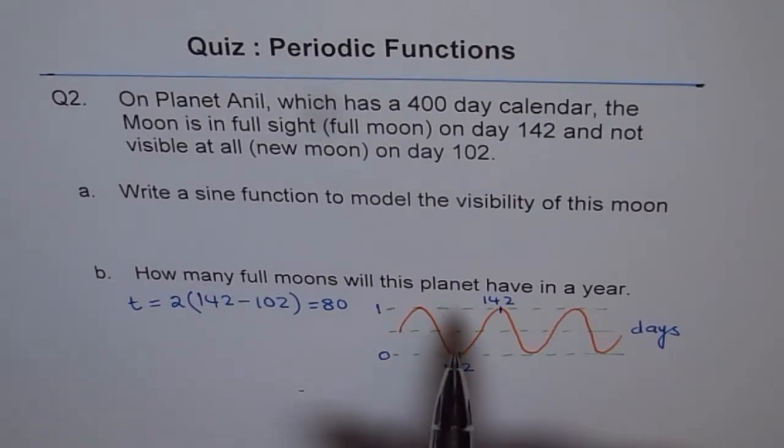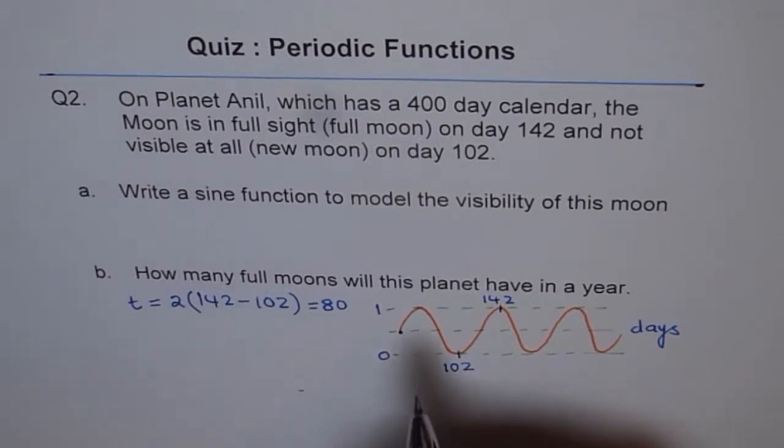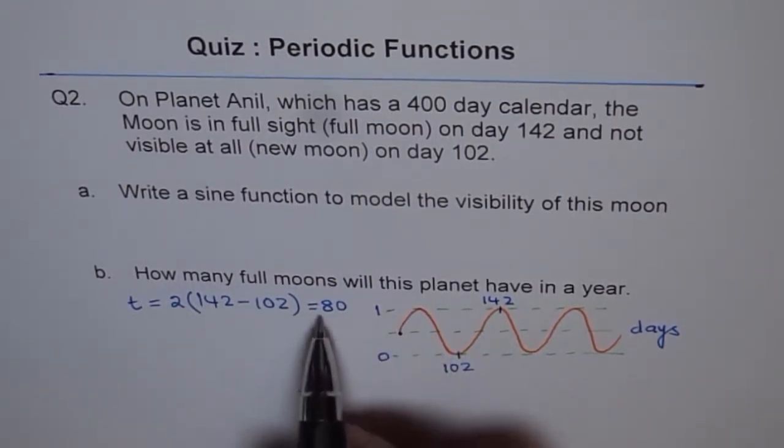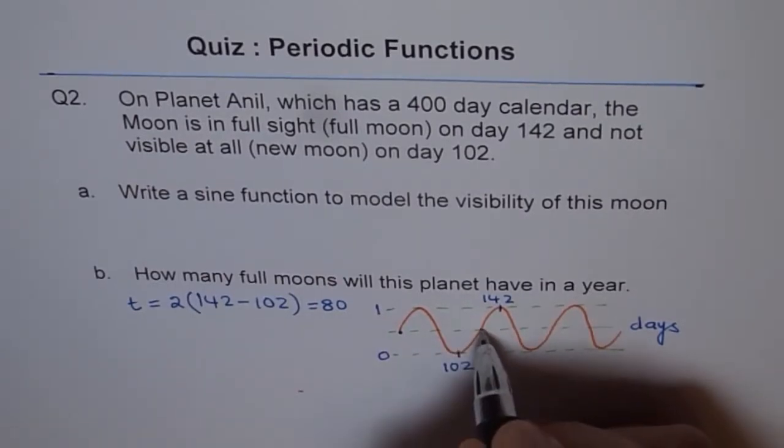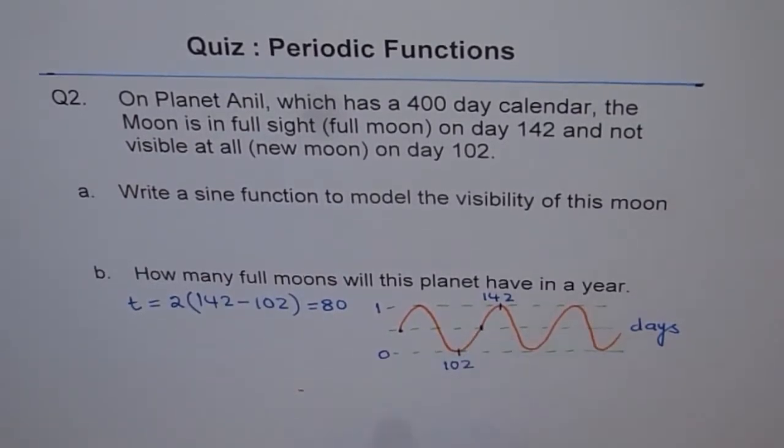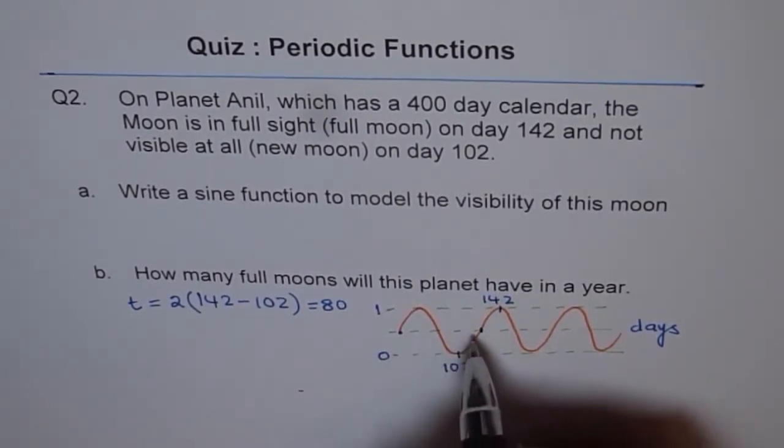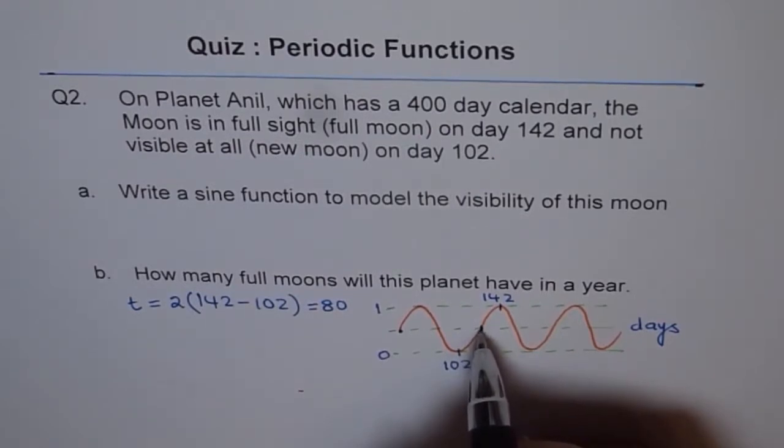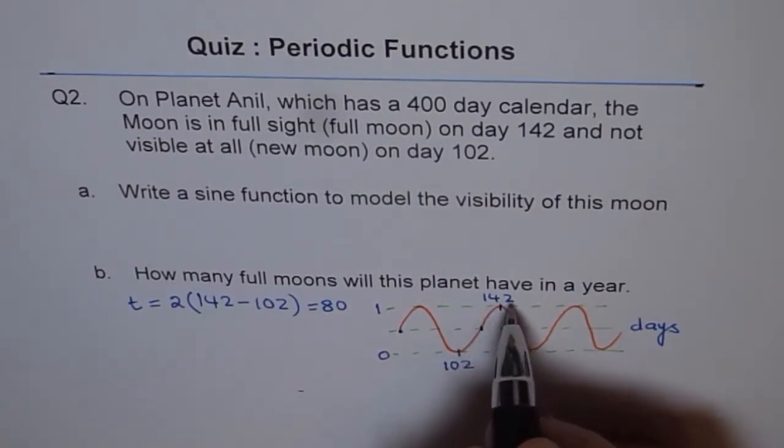Now we have to write a sine function. That means we are looking for this point. When will this start to give us the phase shift? So now we know that 80 is our time period. So what we can do is we can figure out when we will be getting this point, right in the center. When it is kind of 0.5, do you see that? That is the starting point of a sine function. So that should be in between 102 and 142.